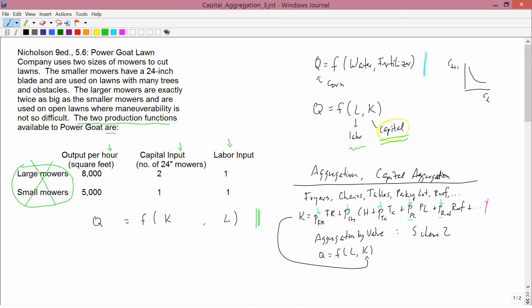So, the first row of the table is actually wrong because it's attempting to measure one 48-inch mower as two 24-inch mowers, and it's not. They're not the same thing. So, we have a description of production here which is wrong. So, this doesn't describe the situation of the Power Goat Lawn Company.